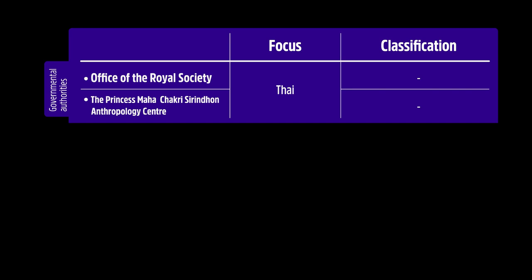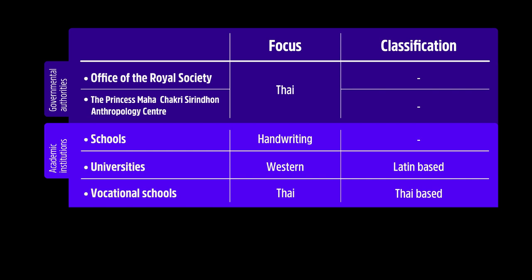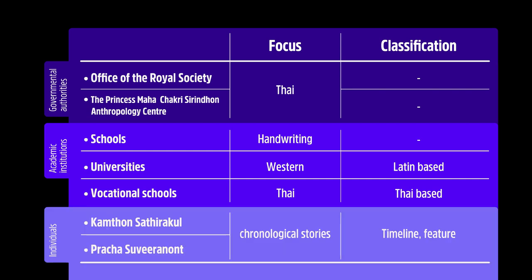Let's have a quick recap. Governmental authorities only focus on Thai fonts, but there are no classifications. Each type of academic institution focuses on completely different things, as you can see from the summaries. Schools have no font classification. Universities classify fonts based on Latin background, while vocational schools do so based on Thai background. Lastly, for individual scholars, they focus on Thai fonts, chronological stories, and classify based on timeline and features of fonts.